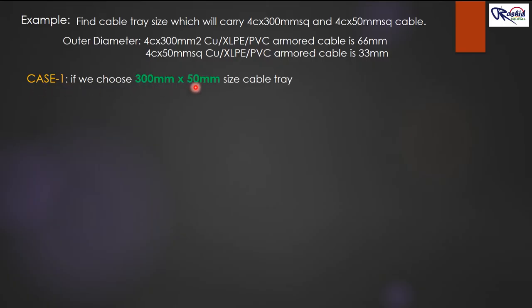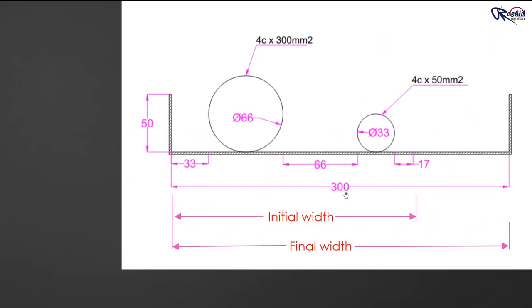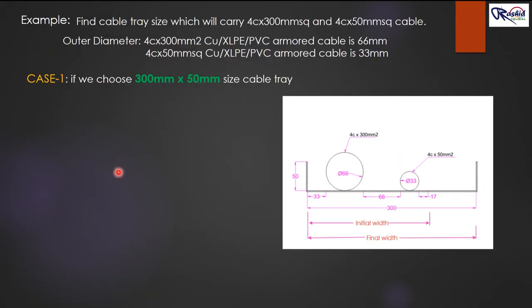If we select a 300 × 50 mm cable tray in case one, the arrangement is: tray width is 300 mm and height is 50 mm. The first cable laid is 4-core 300 mm² and the second is 4-core 50 mm². The gap between these two cables equals the diameter of the bigger cable, which is 66 mm. On the left side we keep 33 mm (half of 66 mm), and on the right side we keep half the diameter of the 50 mm² cable, which is approximately 16.5 mm, rounded to 17 mm.